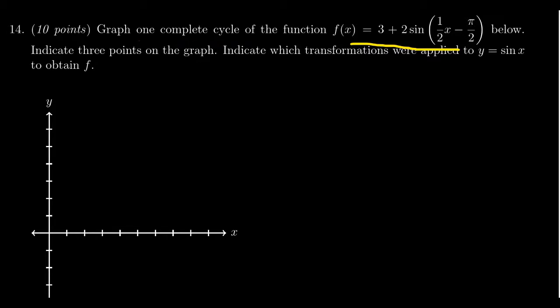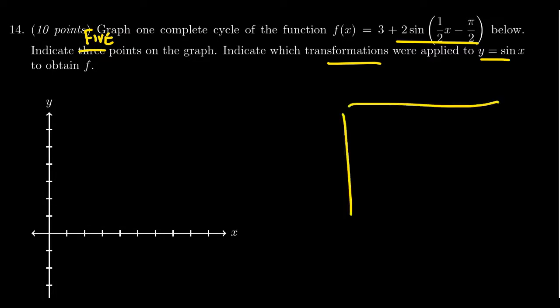Some things we have to do: we do have to label at least three points on the graph. I'm actually going to do five because honestly, drawing a sine wave, it's just easier to have five points. And then we need to indicate all the transformations we've done to y = sin(x) to get here. That's where we're going to start, we're going to list these things right here in the blank.